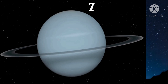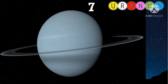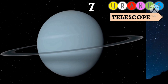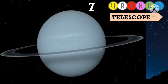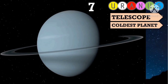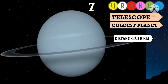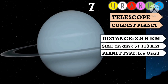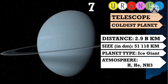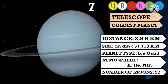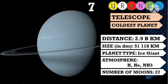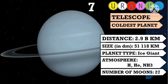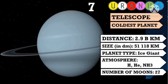The seventh planet is Uranus. It is the first planet discovered by means of a telescope. It is considered an ice giant and the coldest planet. Its atmosphere is mostly hydrogen, helium, and methane. Uranus is the only planet that rotates on its side. Uranus has rings too, and has 27 moons.